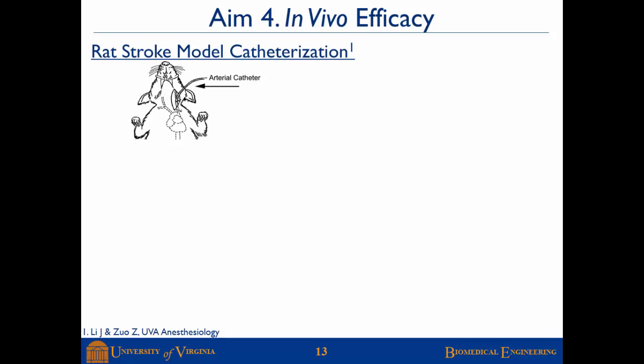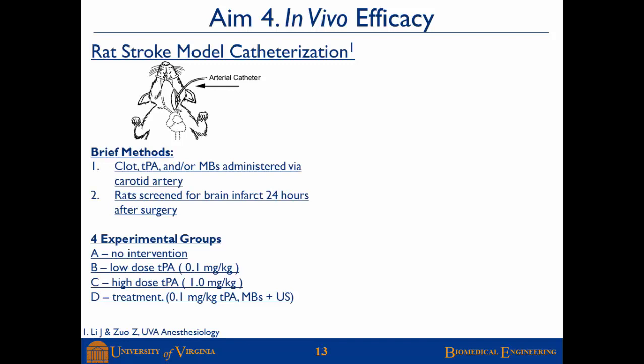For aim four, we tested the system using our microfluidically produced microbubbles in a rat stroke model. We catheterize the carotid artery, administer the clot directly into the brain, and let it sit for 15 minutes to establish a fixed position. Over the following 30 minutes, we administer TPA and/or microbubbles via the same carotid artery. After therapy, the carotid artery and surgical site are closed, the rats live for an additional 24 hours, and we screen for brain infarction at that time point.